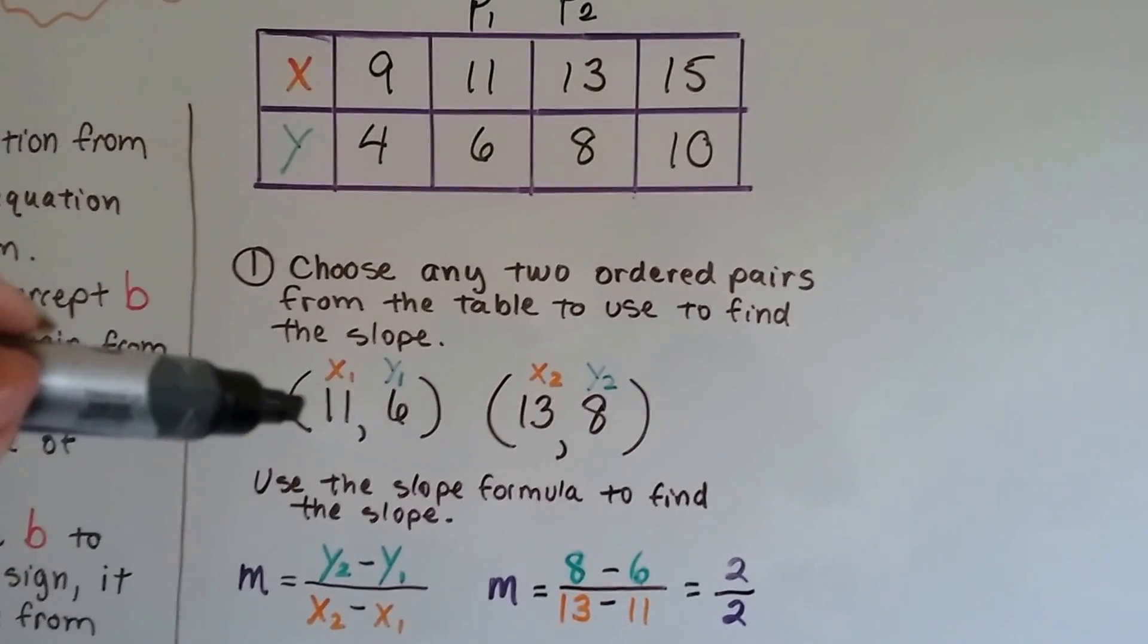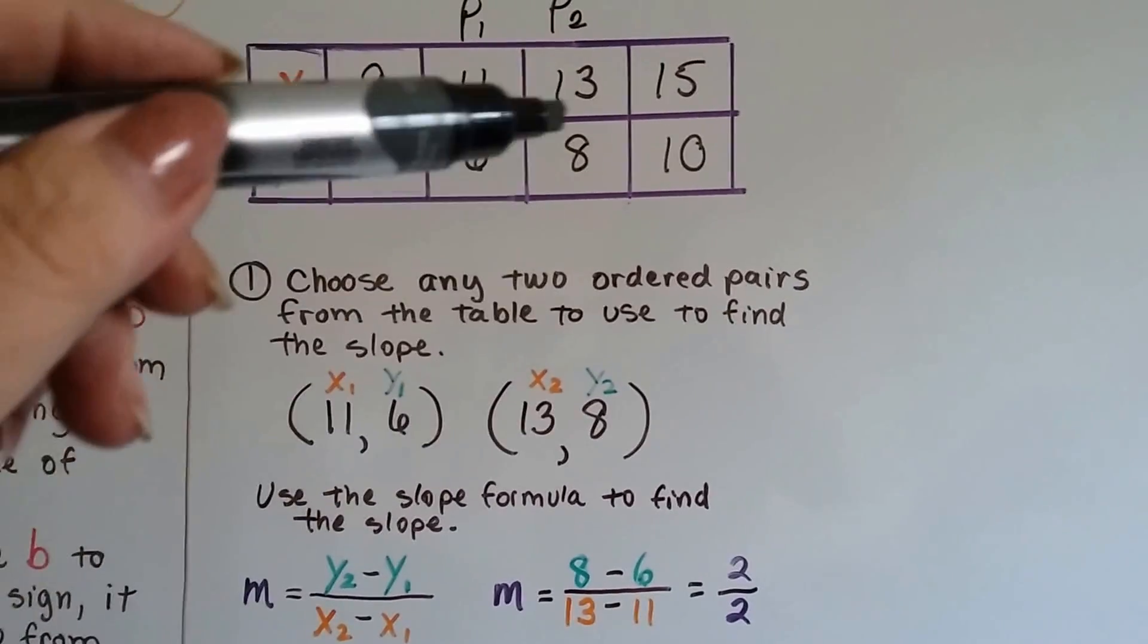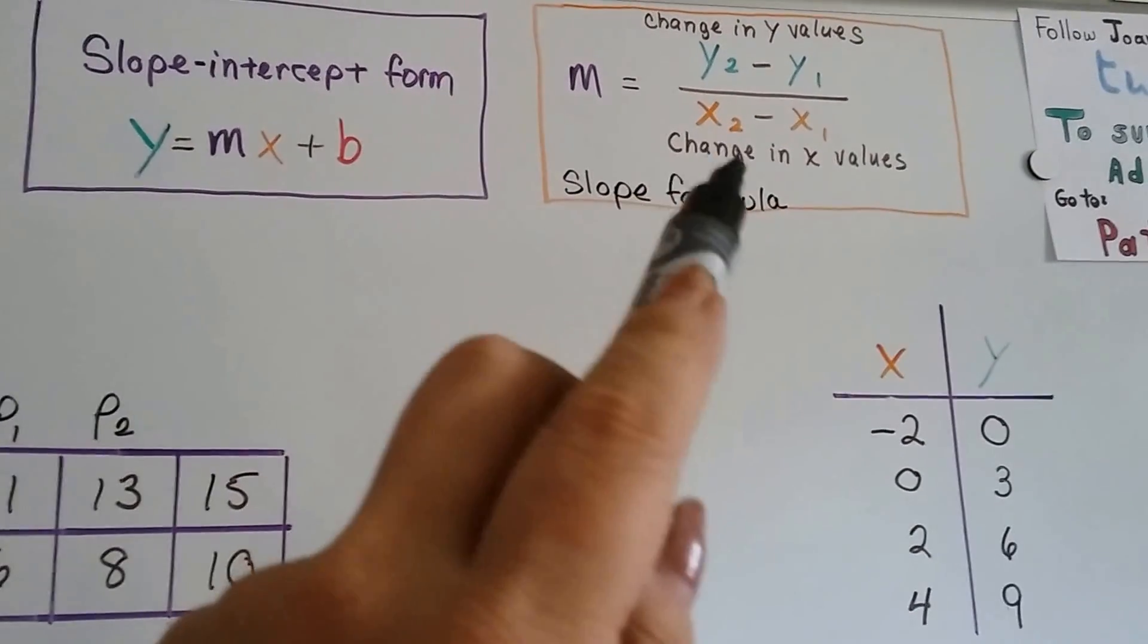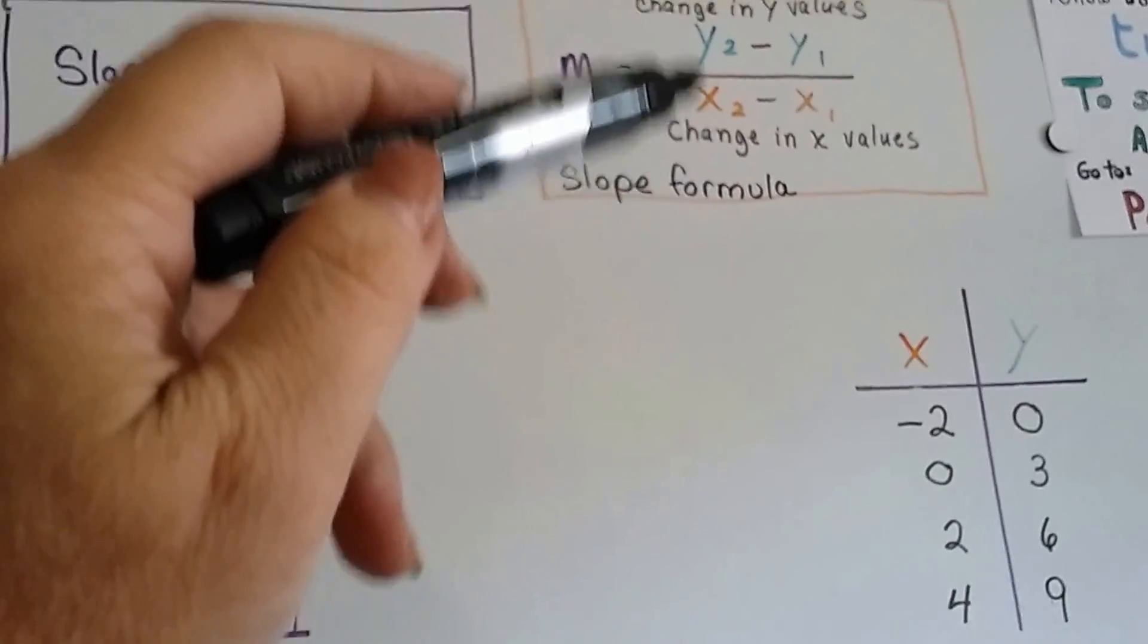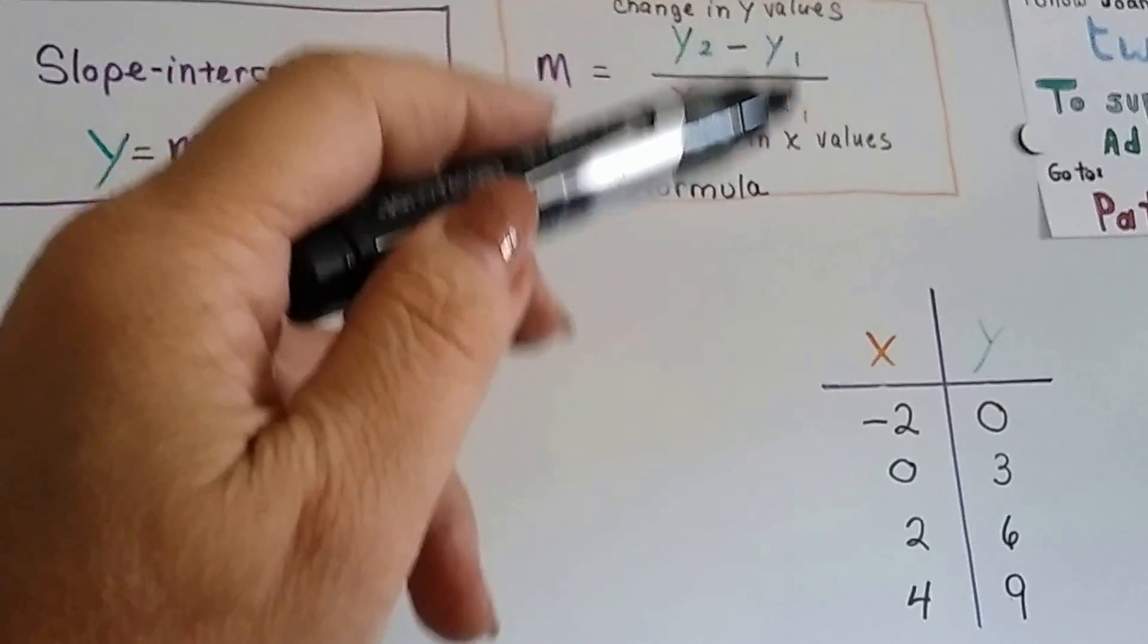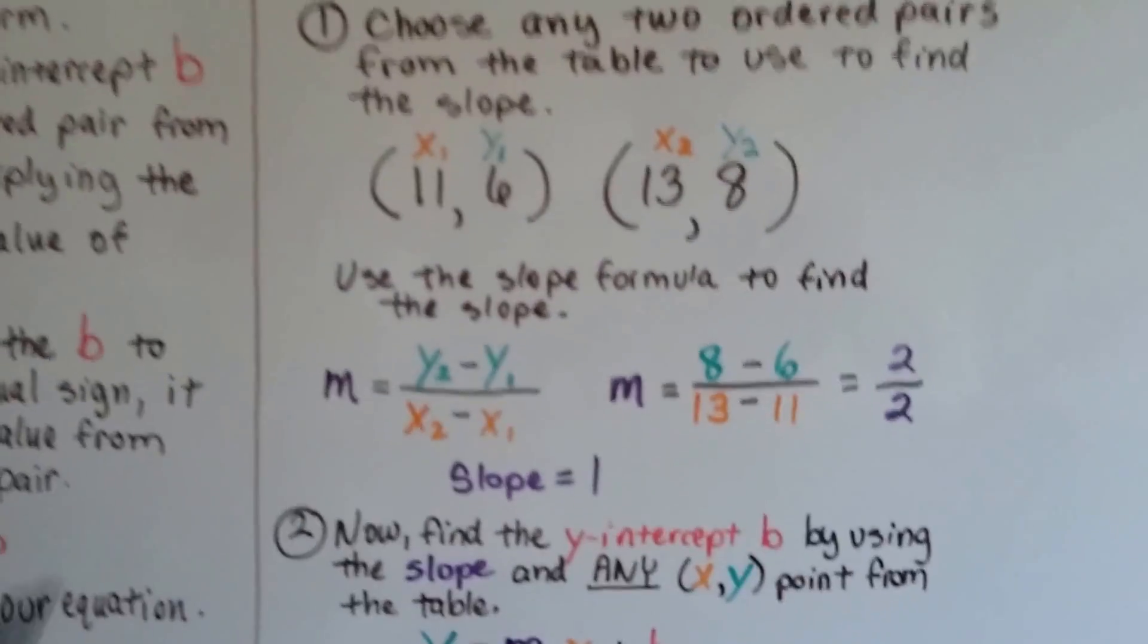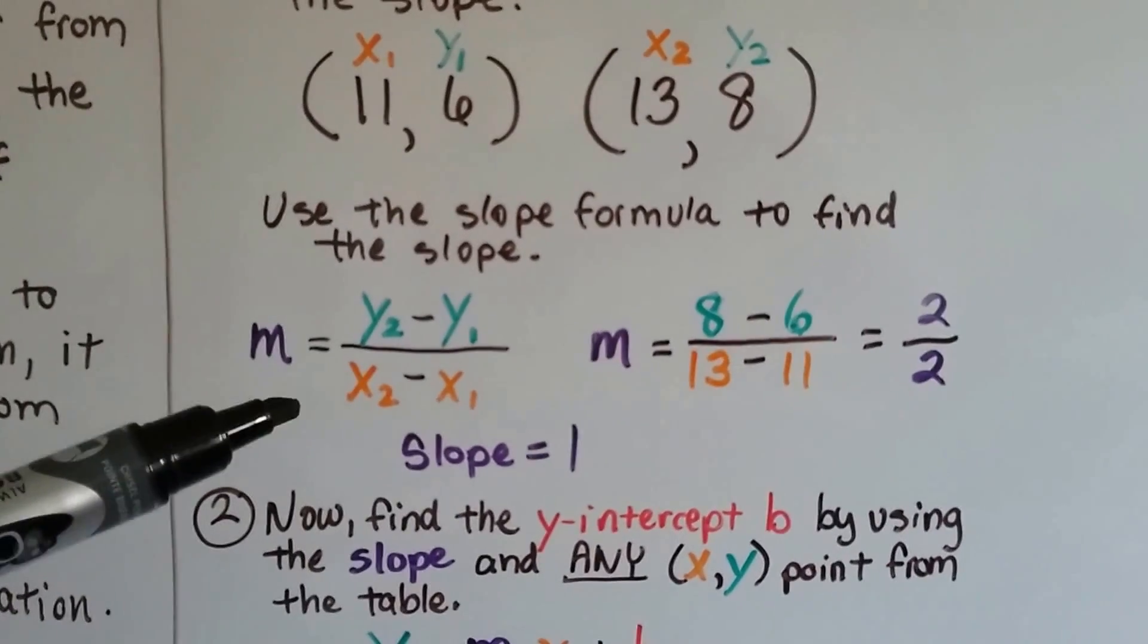So we write them down. x1, y1 is 11, 6, and x2, y2 is 13, 8. And we need to do that because we're going to put them into the slope formula where we need to have the y2 and x2 values on this side. And we're going to subtract the y1 and x1 values from them. So here it is again. Same thing as up there. And we're going to use the slope formula to find the slope.